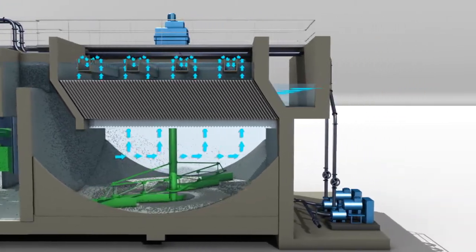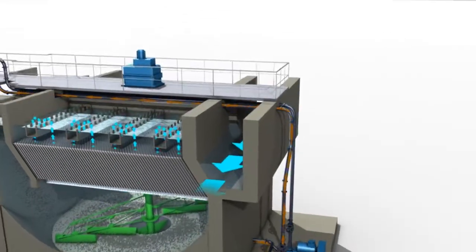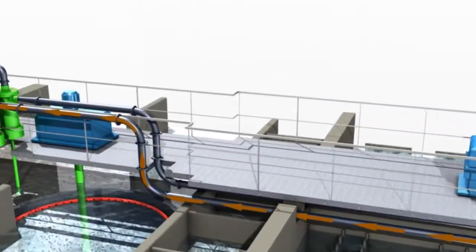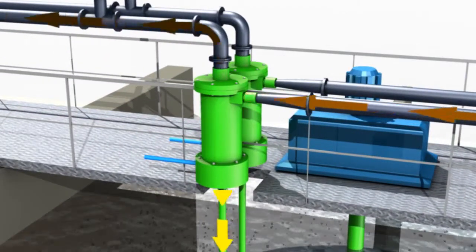The microsand sludge slurry is scraped to the central pit of the settling tank, from which it is withdrawn with the help of a rubber-lined centrifugal pump and sent to a hydrocyclone.